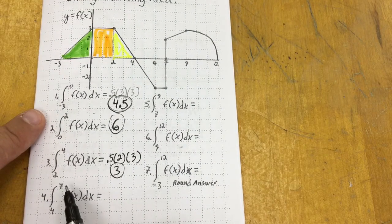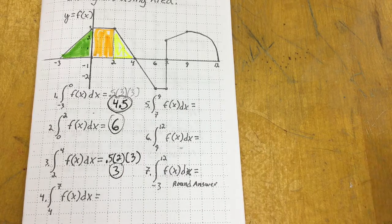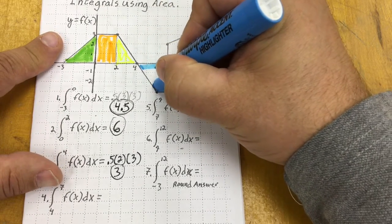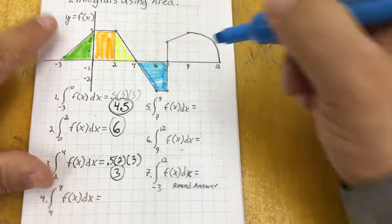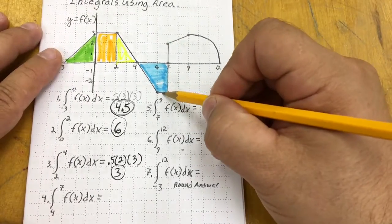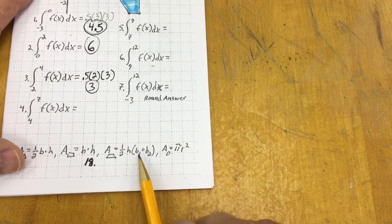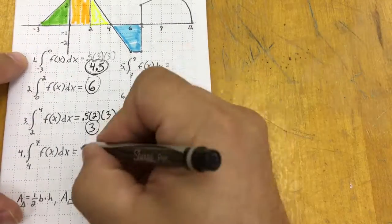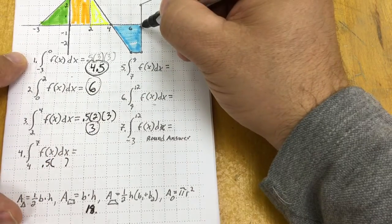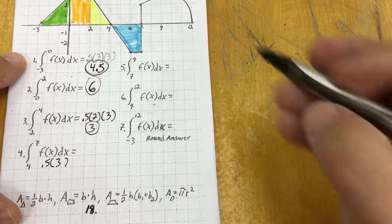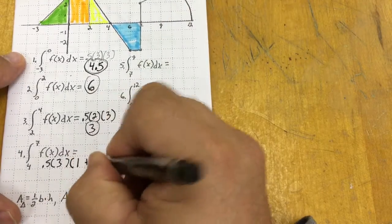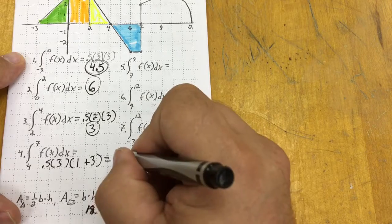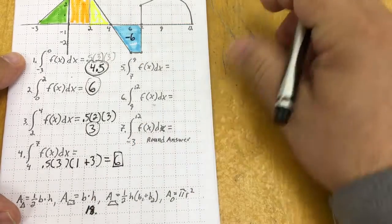Now this is kind of strange. I want to find an area from 4 to 7, and notice it's below the curve. That's going to generate a negative area - I know that kind of goes against your intuition, but in calculus that would give us a negative area below the x-axis. That's actually a trapezoid, and the formula for a trapezoid is 1 half the height times the quantity of base 1 plus base 2. So that would be 0.5 times the height which is 3, base 1 which is 1, plus base 2 which is 3. That's going to give me 1 half times 3 times 4, which would give me 6, but it's actually negative 6.